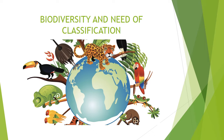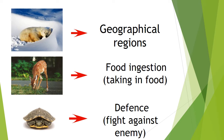Let's begin with our first subtopic, that is Biodiversity and need of classification. Biodiversity refers to all the variety of life that can be found on earth. Last year, we learned that all living organisms on earth have adapted according to geographic regions, food ingestion, defense, etc. Here, food ingestion means taking in food, and defense means fight against enemy. While adapting, many differences are observed in the organisms of the same species too.